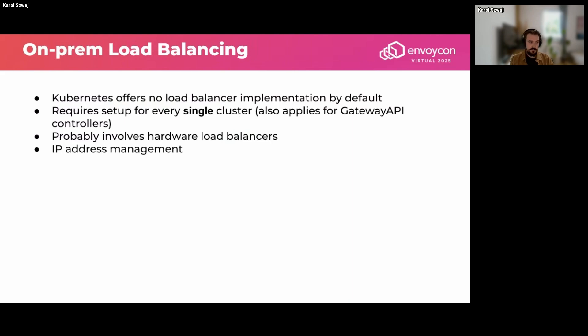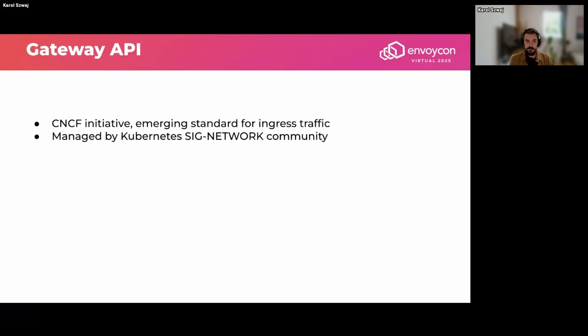Kubernetes offers no load balancer implementation by default on-prem. With multiple clusters, it requires setup for each of them, and that also applies to your Gateway API controllers — you need to literally set up every controller per cluster. It also involves hardware load balancers and IP address management to get your networking done properly.